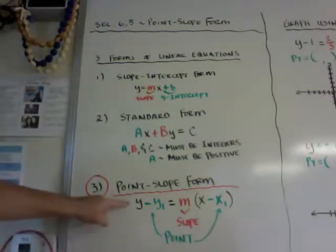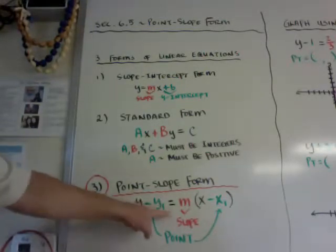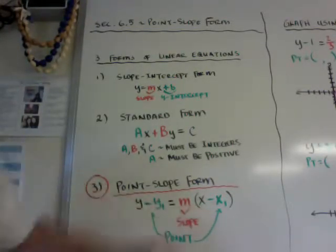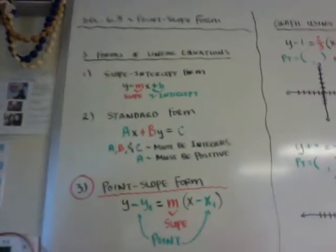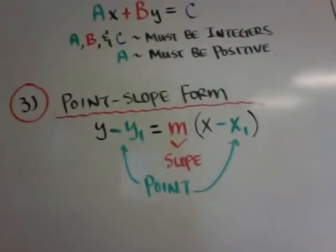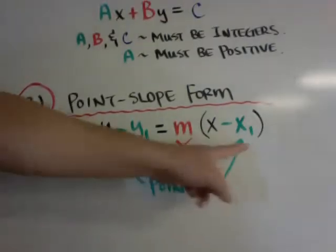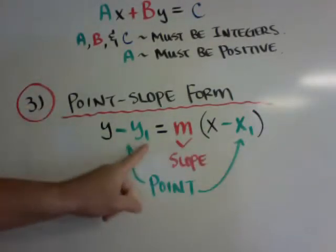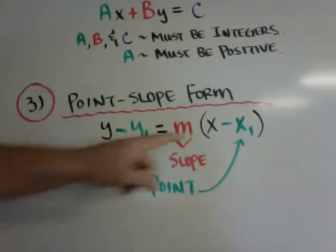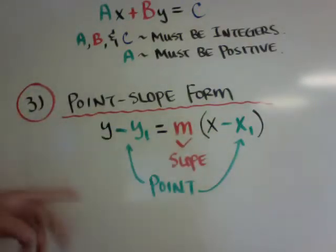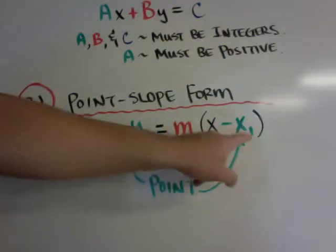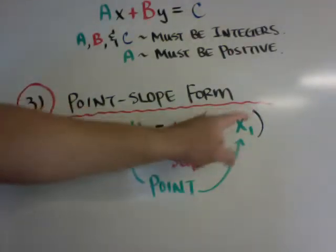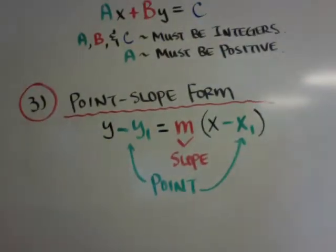The formula is y minus y1 equals m — the slope — times the quantity x minus x1. m is your slope, and the green point is your coordinate. Notice it's a minus sign. So if you have a positive x and a positive y, you're going to have negative numbers here. If it's a negative x, it becomes minus negative x, which turns out positive, and you'll see what I mean in the next part.